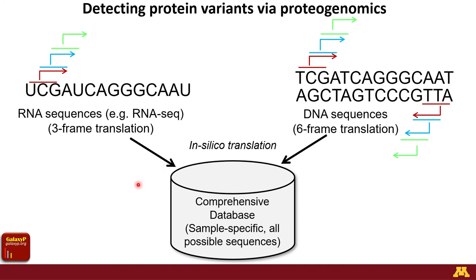Proteogenomics is a twist on that idea. One limitation of standard proteomics is that identification is only as good as the database used. If there are novel protein sequences that haven't been previously identified biochemically but are present in the sample, they won't be found if they aren't in the database. That's the core limitation that proteogenomics addresses.